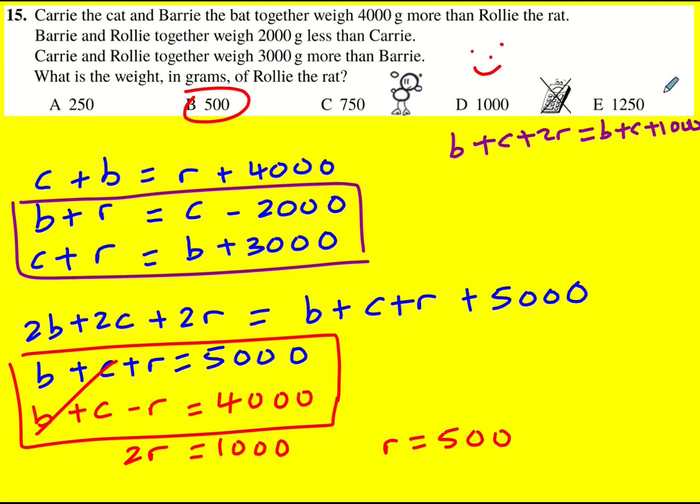You can actually avoid equation one completely because the B + C cancels, and then we've got 2R = 1000, so R = 500. To be fair, that is better, but I'm just explaining how I did it, and the optimal solution is this one.